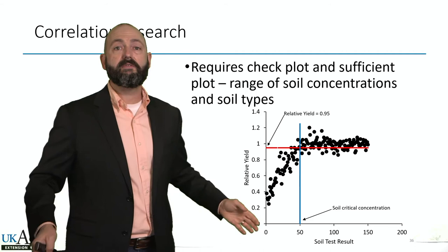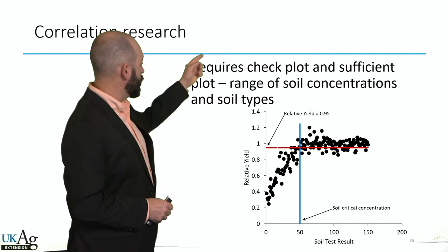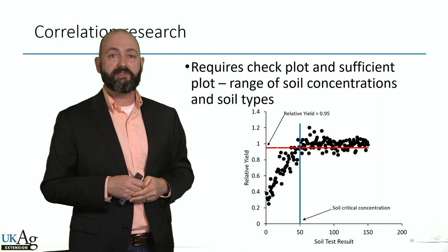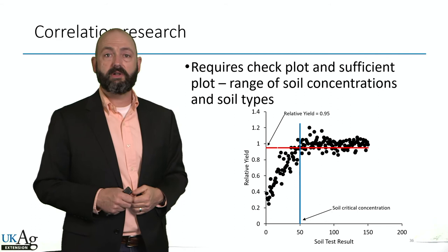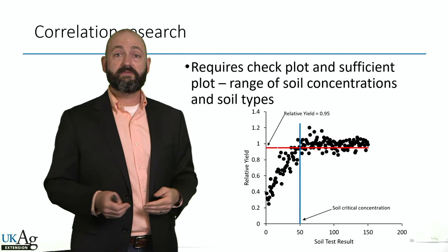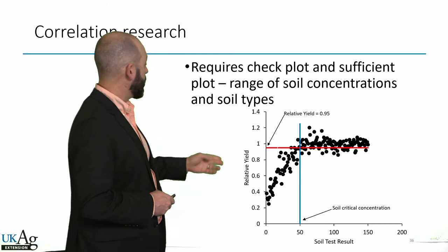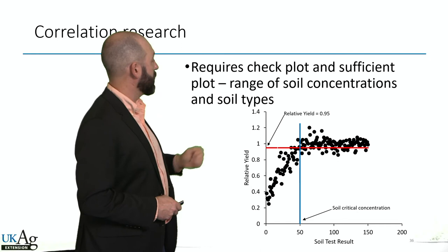I can compare the yield from those two rates using relative yield — taking the unfertilized yield and dividing it by the fertilized yield. For example, if I got 200 bushels per acre of corn with phosphorus fertilizer and the check plot got 100 bushels per acre, my relative yield is 0.5, or 50%. All I'm trying to find is that critical concentration in the soil above which I don't get a response to fertilizer and below which I do.